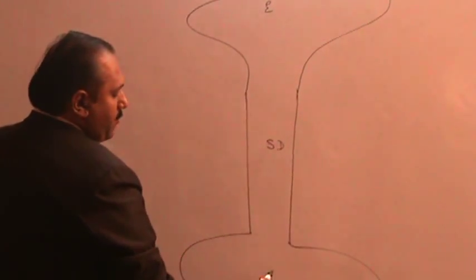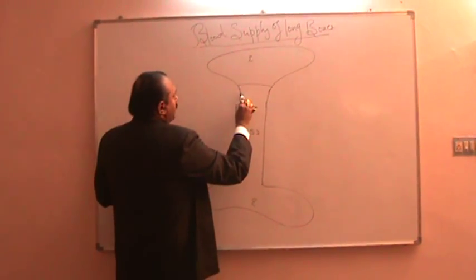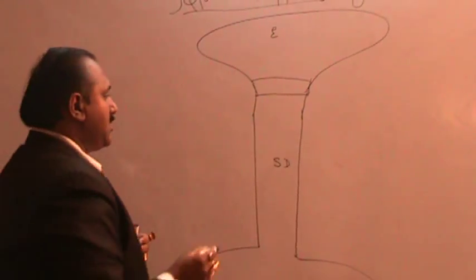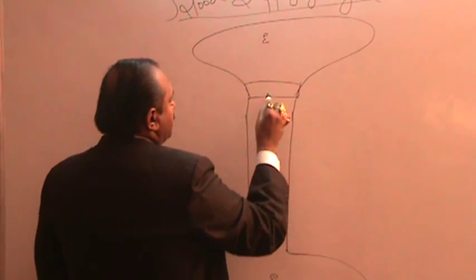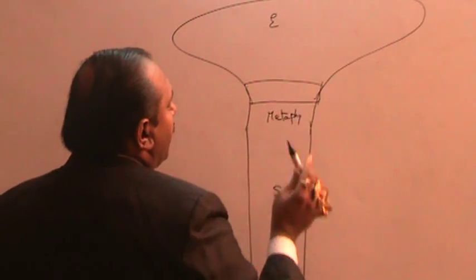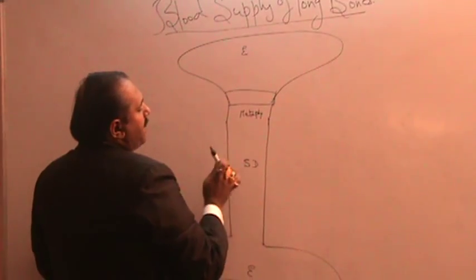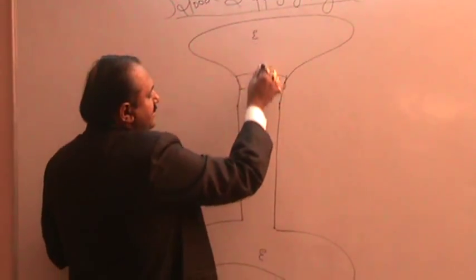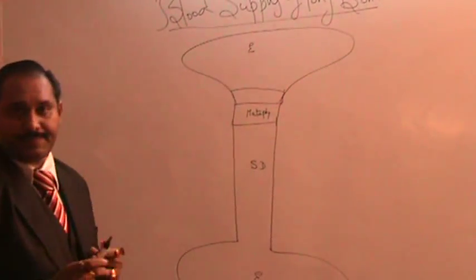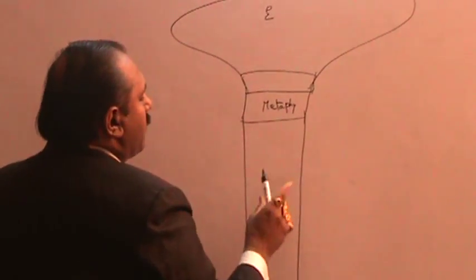Here you have the epiphyses above and below, and here you have the epiphyseal growth plate cartilage — this is a plate of epiphyseal cartilage. And here you have a region called the metaphysis. The metaphysis is nothing but the epiphyseal ends of the diaphysis.